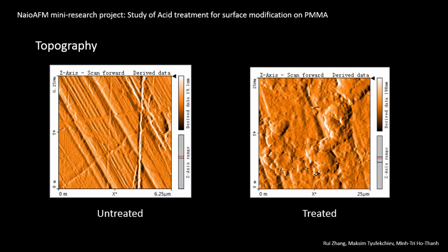We first acquire the topographies of both the untreated and treated samples. By comparing these two figures, we can see that after the treatment, the sample looks much rougher than the untreated one.